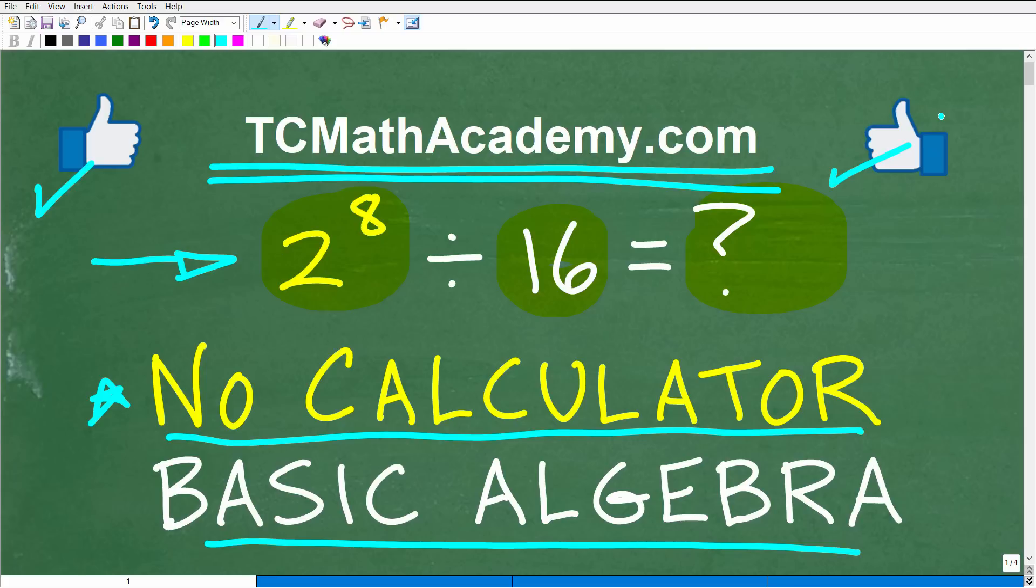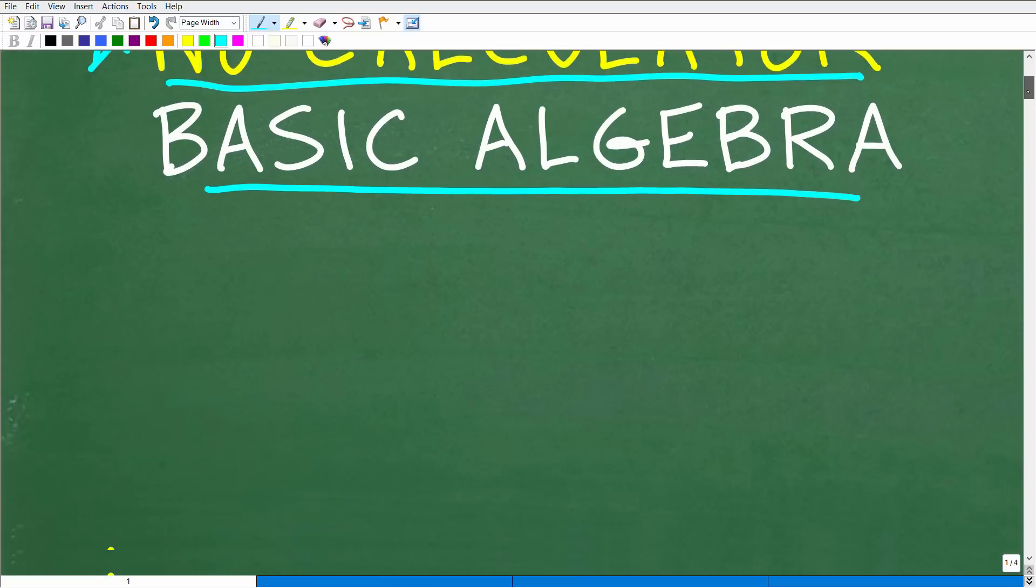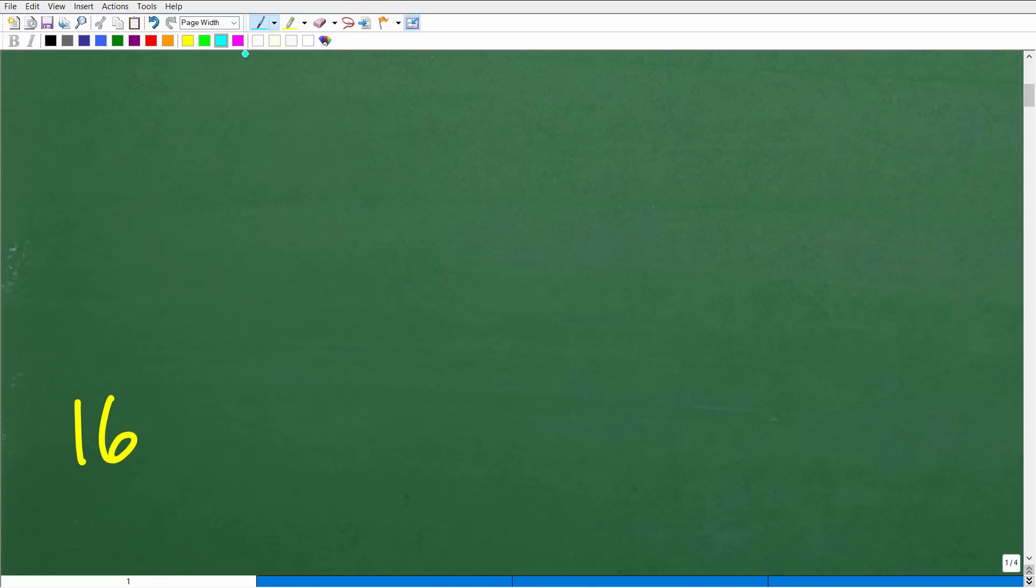Okay, so let's go ahead and see the answer again. 2 to the 8th power divided by 16, what does this equal to? Well, if you came up with 16, that means that you are a math genius indeed.